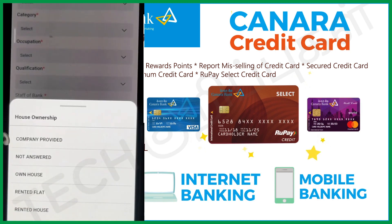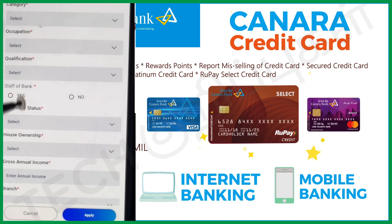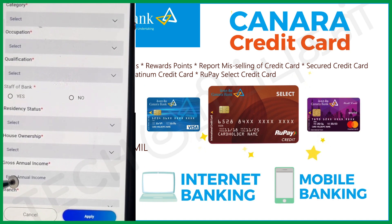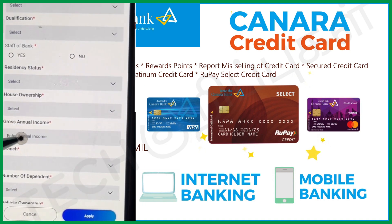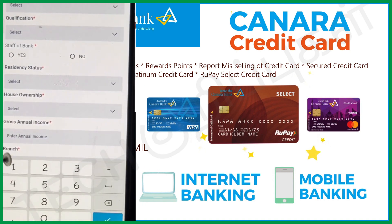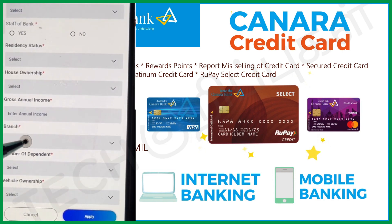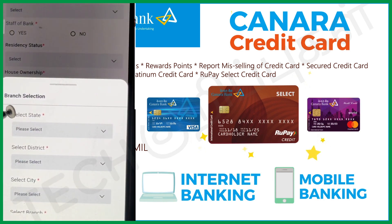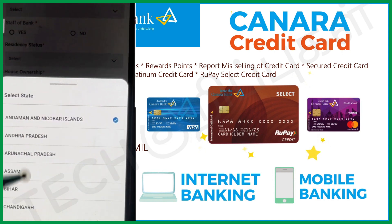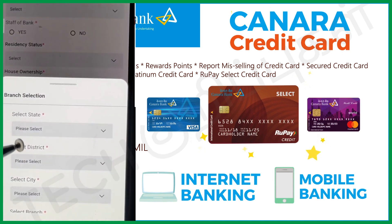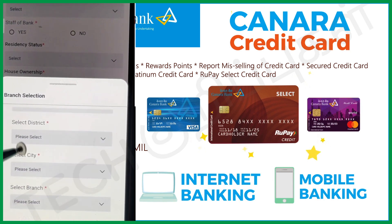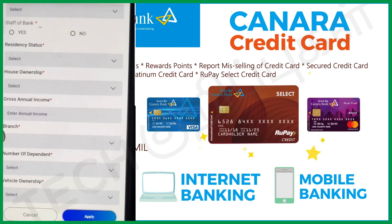You can also choose a permanent house address. If you need to provide a home address or if you are renting, you can select accordingly. If you need to check ITR file details, you can do so. Select the state, then select the district, then select the city, and then select the branch.